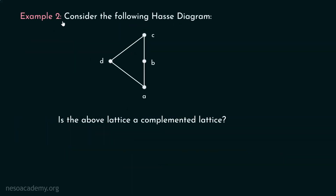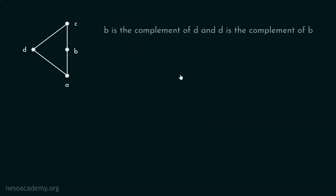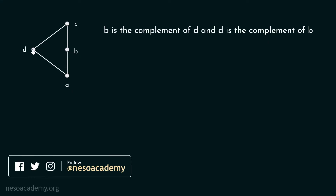Let's consider another example. Consider the following Hasse diagram — is the above lattice a complemented lattice? B is the complement of D and D is the complement of B.